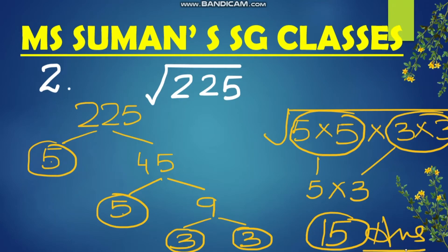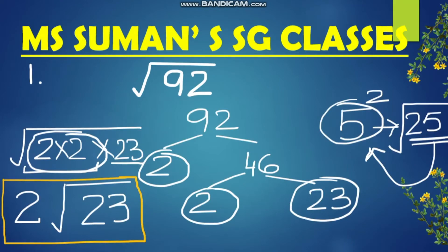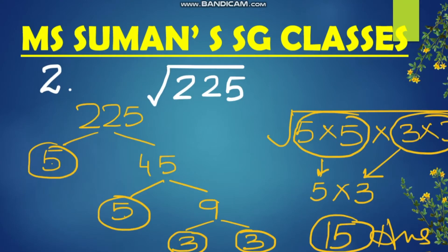When all members come out, we do not write the square root sign. When a member stays inside — like 23 stayed inside in the previous example — it remains under the square root sign. But since here all numbers are already in pairs, we do not write the square root sign. The answer is simply 15.